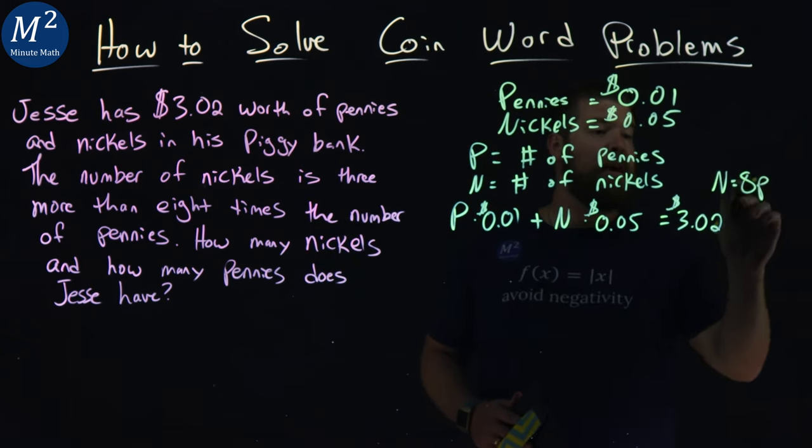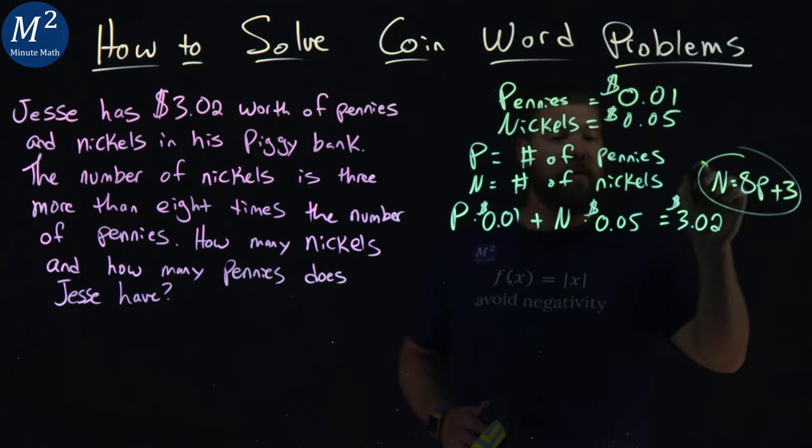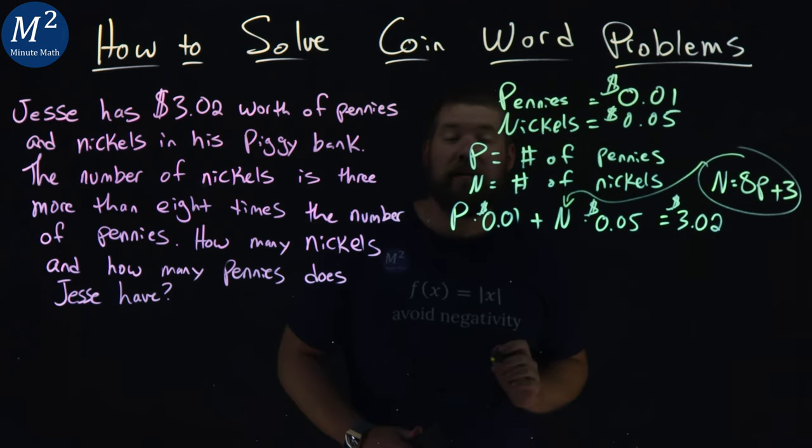So 8p, eight times the number of pennies, plus three more than that. We can apply this right here for that n.